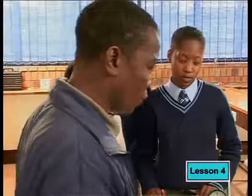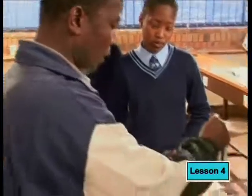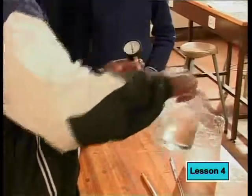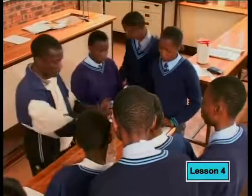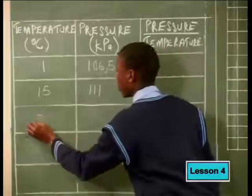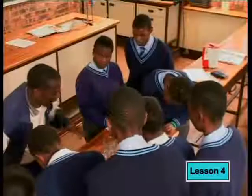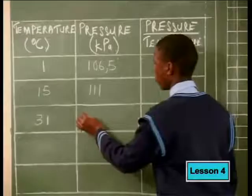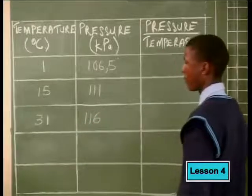The next reading: we add some hot water to increase the temperature of the tap water. The temperature gives us 31 degrees Celsius, and the pressure is 116 kilopascals.